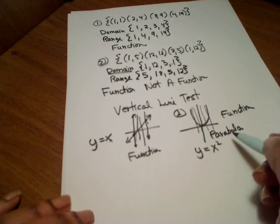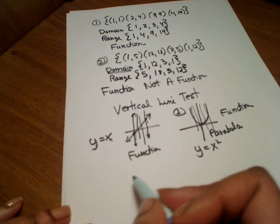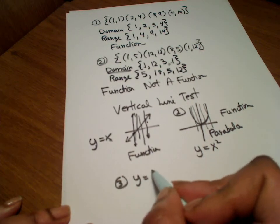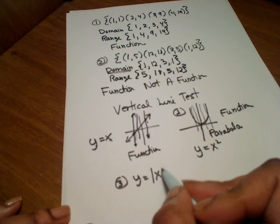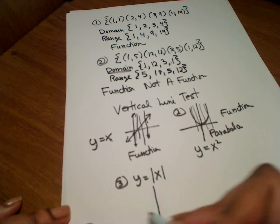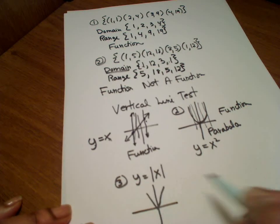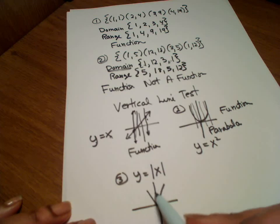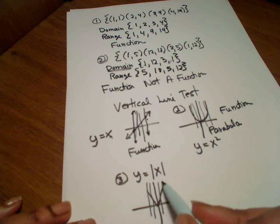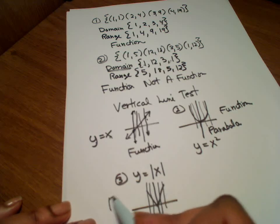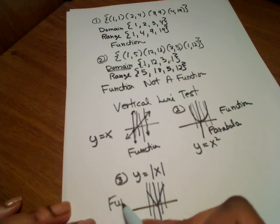Then we have the absolute value shape, which forms a V. When we do the vertical line test on this V-shape, I'm only hitting it at one place. So therefore, this is also a function.